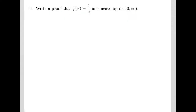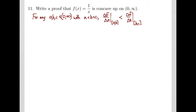Problem 11 looks at the same function as problem 10, but this time it asks us to show that the function is concave up. Again, we need to use the definition. The definition of concavity is focused on the idea that the slope is increasing, and this requires three points. We take three unspecified points in our interval, put them in order so a is less than b is less than c, and the slope from a to b must be less than the slope from b to c — going from left to right, the slope has to be increasing.